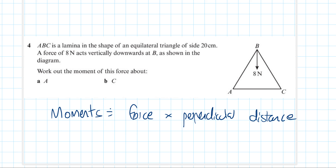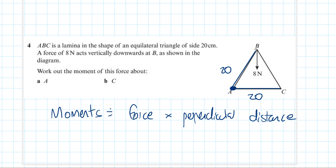We're told that the sides of the triangle are 20, so we know that this length here is 20 and this one is going to be 20 as well. We want to work out the moment of this force about A. We've got a downwards force that's acting directly downwards, and we are interested in it at B.